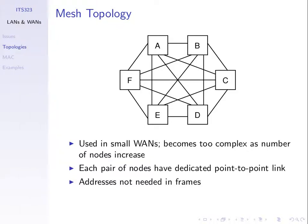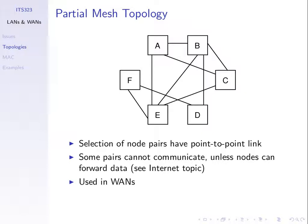A partial mesh doesn't have links for all pairs of nodes — fewer links, but some nodes can't communicate directly. However, a node can send to an intermediate node which forwards the data, which is what switching does. A partial mesh topology is commonly used for large networks like wide area networks.